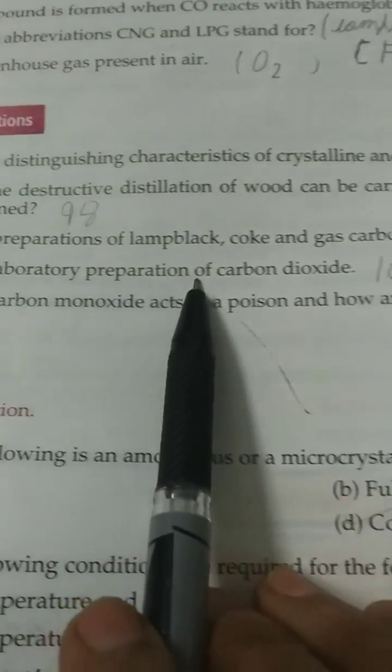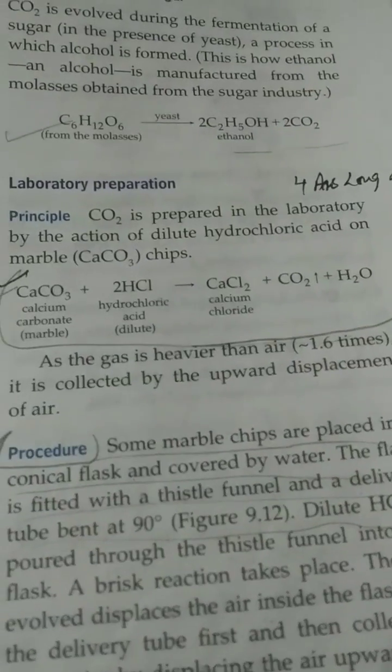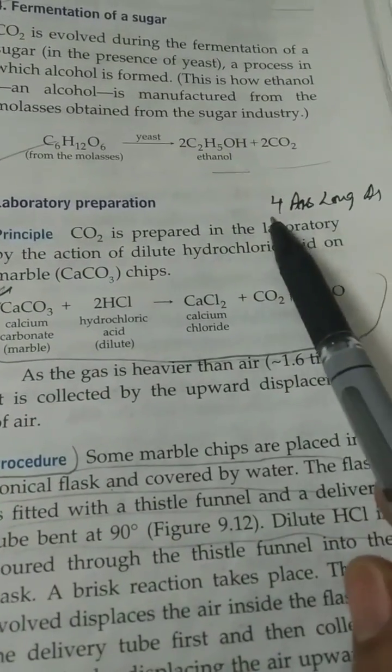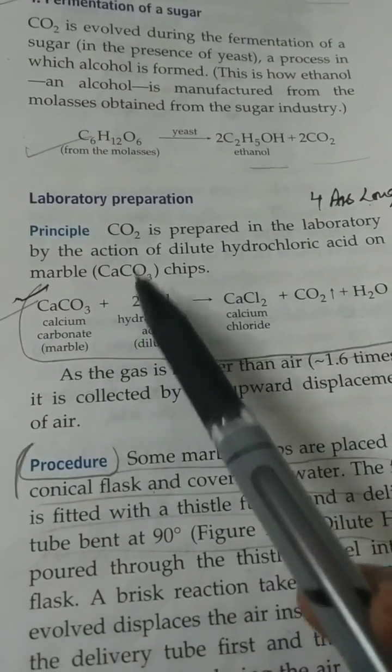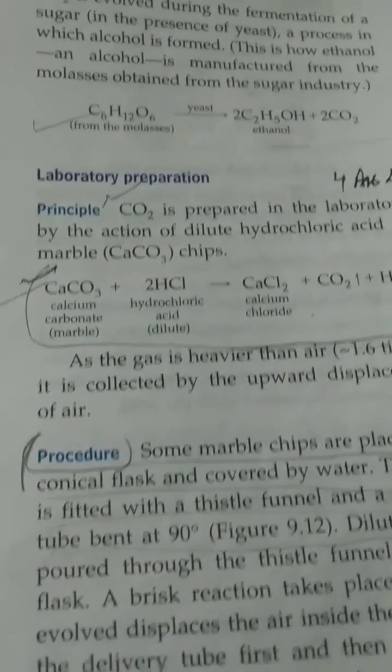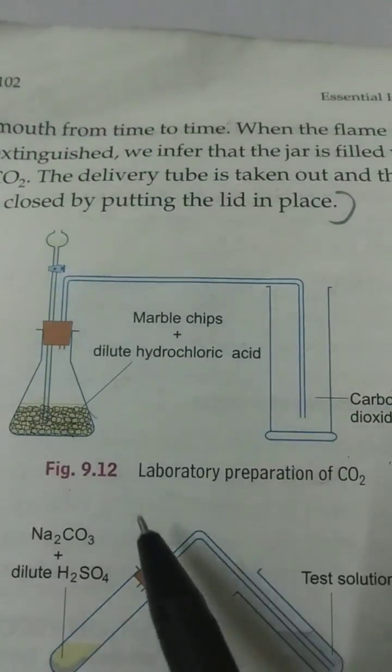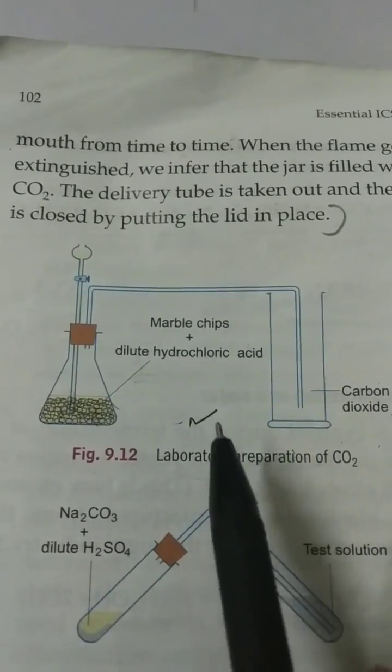Fourth, describe the laboratory preparation of carbon dioxide. See page number 101 and 102. Laboratory preparation - fourth answer. It is of long question answers. First, you will write this principle and reaction. Then you will write procedure. Afterwards, you will draw this diagram with this answer.